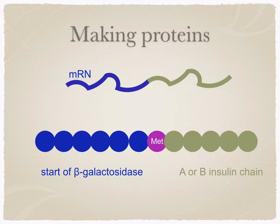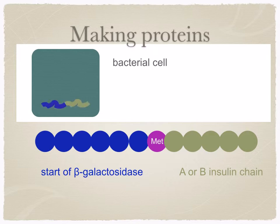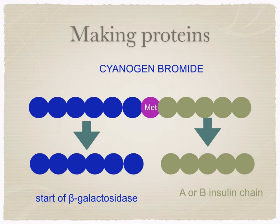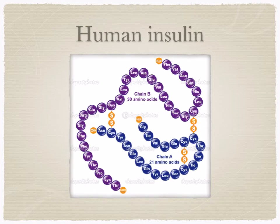These two are going to be attached by methionine between them. The bacterial cells are then treated with lysozyme and detergent to break them open. The proteins are isolated and then treated with cyanogen bromide, which splits the chain at methionine. So you've got your A or B insulin chain separate from the start of the beta-galactosidase enzyme. Finally, your A and B chains are separated by chromatography and mixed together so that they form disulfide bridges. Humulin is one of the branded names, so your human insulin can now be marketed.